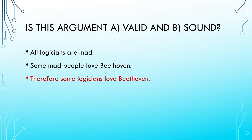Let's try the next one: 'All logicians are mad. Some mad people love Beethoven. Therefore, some logicians love Beethoven.' Pause the video now. If you said the argument is invalid and therefore unsound, you are correct. The premises do not guarantee the conclusion — I can accept a world where the premises are true but deny the conclusion. All logicians are mad, and some mad people love Beethoven, but it doesn't necessarily follow that the logicians intersect with those who love Beethoven. All logicians being mad is different from all mad people being logicians, so these premises don't get us to the conclusion.